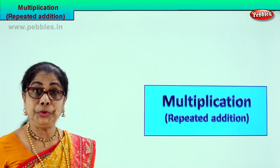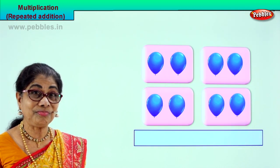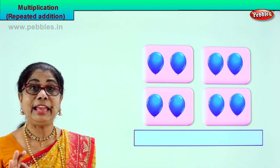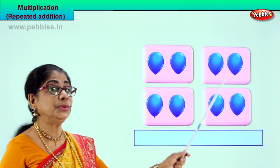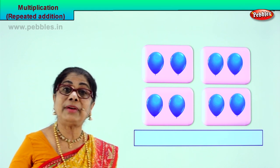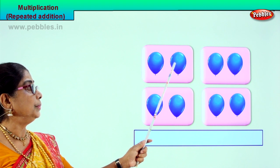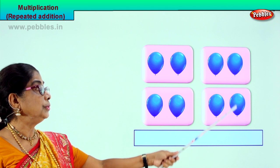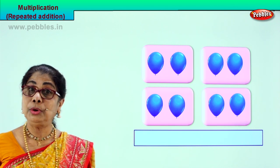Look at the picture I have for you. We are going to count, and counting is very important. We have one, two, three, four boxes. And in each box we have how many balloons? Two. One, two. One, two. One, two. One, two. Each box has two balloons.